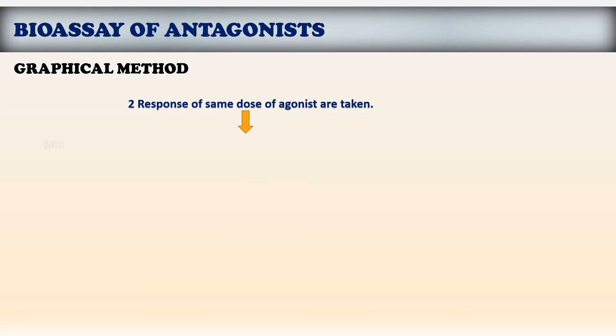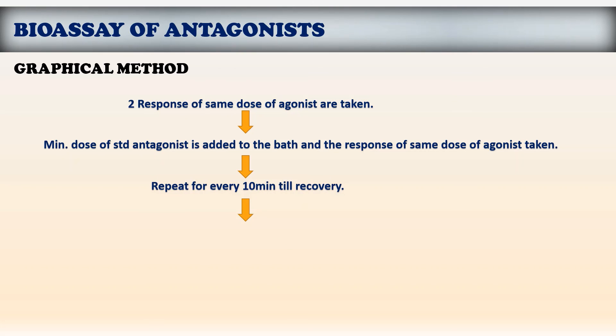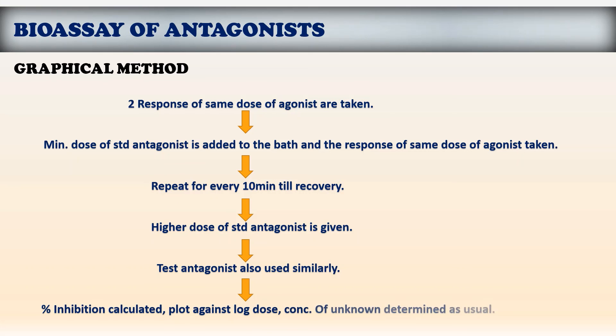Here two responses of same dose of agonist are taken. And in the bath we are adding minimum dose of standard antagonist and the response of same dose of agonist can be taken. And this is repeated for every 10 minutes till the recovery and the higher dose of standard agonist is given. And the test agonist also used similarly and the percentage inhibition is calculated by plotting against log dose and concentration of unknown determined as usual method.